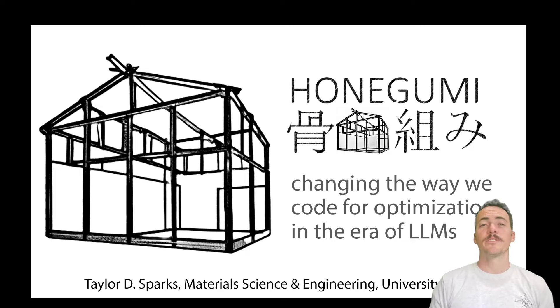Hey everybody, welcome back to our materials informatics series. Today I want to talk about Honogumi. Honogumi is a software package that a couple of my students put together, which I think is going to change the way that we code for optimization, particularly in the era of large language models. Let me describe with a couple slides.